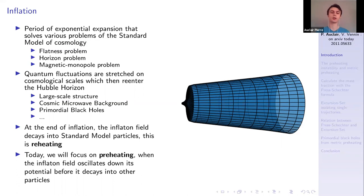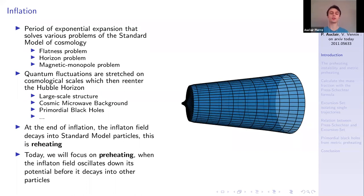At the end of inflation, the inflaton field that drives inflation usually decays into standard model particles — a phenomenon called reheating. The phenomenon we are looking at today is something in between inflation and reheating, called preheating. It's the phase in which the inflaton field oscillates down its potential and does not yet decay into other particles, and this oscillation leads to instabilities that may produce and over-produce primordial black holes.